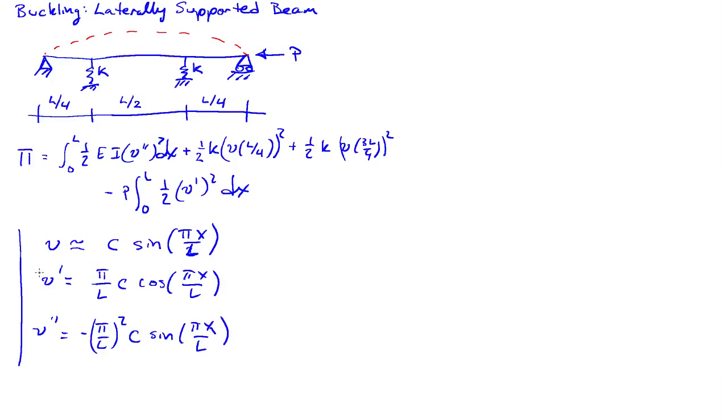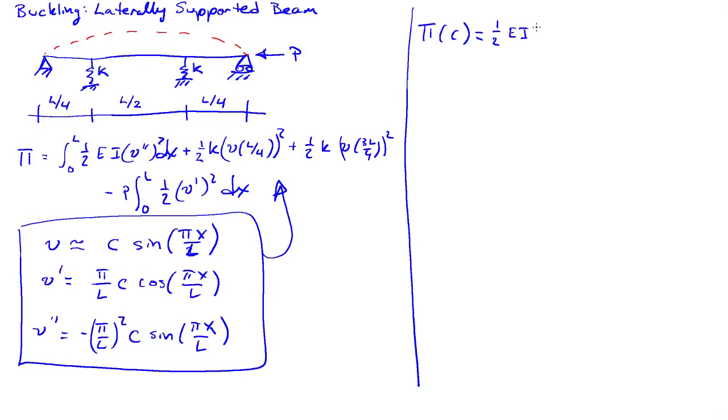We're going to take these terms and plug them into the potential energy of the system. Then we can write the potential energy strictly as a function of the constant c. From the first term, 1 half e i c squared times pi over l to the 4, l over 2. When we integrate sine squared, we simply get l over 2.